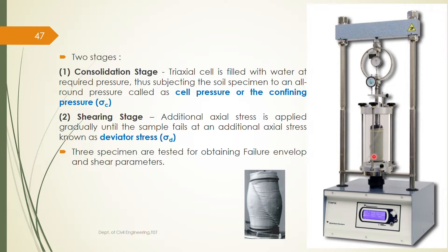At failure we will see undulations or deformations in the soil, which are easily observable from outside. We test at least three specimens because the failure envelope is obtained by drawing a tangent to the Mohr circles. If we get three Mohr circles it is easy to draw a common tangent. This is how you perform the triaxial test.